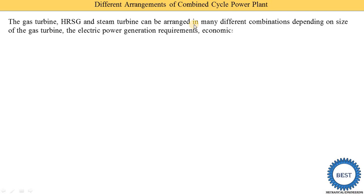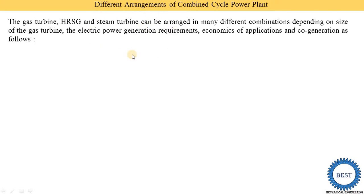These different arrangements depend on various parameters. The first parameter is the size of the gas turbine. The second is the electric power generation requirement — how much electricity we want to produce. The third is the economics of the application. The fourth is cogeneration, meaning the steam coming out from the steam turbine can be used for different process heating. There are three types of arrangements.